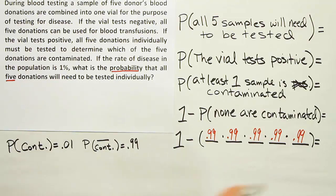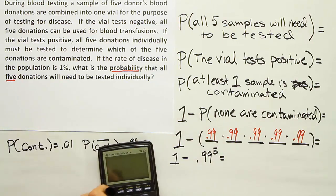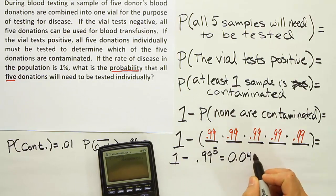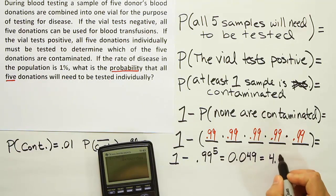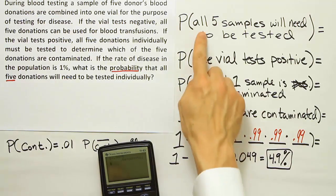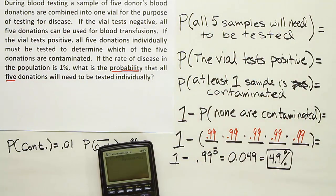So the final calculation becomes 1 minus 0.99 to the fifth power. Using a calculator: 1 minus 0.99 raised to the fifth power gives us 0.049, or as a percent, 4.9%. So there's a little under 5% chance that the blood bank will have to test all five samples from a vial of blood.